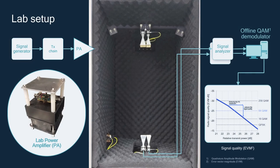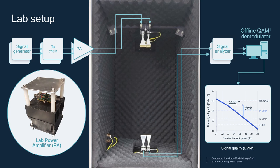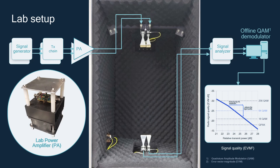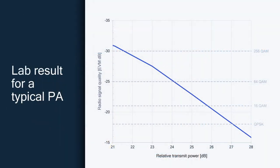Here, you can see our lab setup, where we are transmitting a signal through a typical power amplifier, receiving the signal, and analyzing the signal quality with and without our DPOD technology. Let's look at our lab results, and as an example, let us look at the operating point of 64QAM modulation.